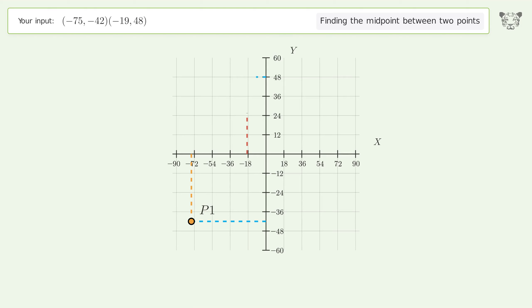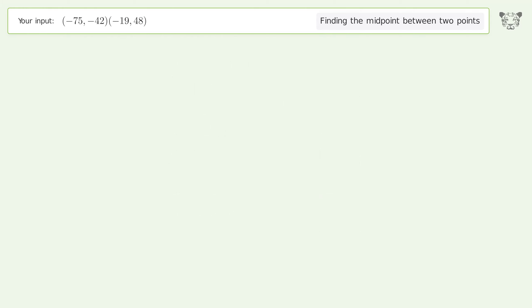The coordinates of Point 2 are: x₂ = -19, y₂ = 48. Pm represents the midpoint of the two points.